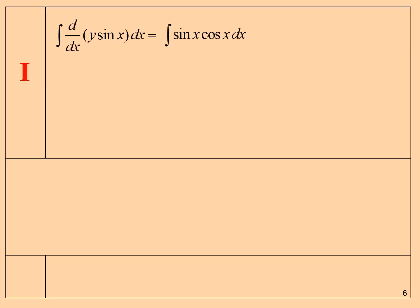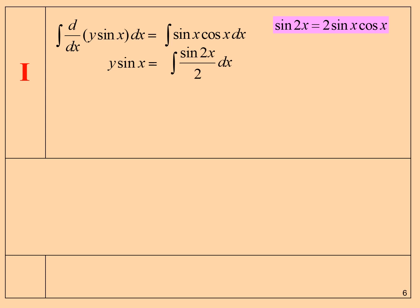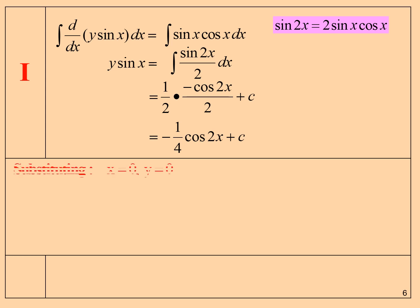Integrate both sides. Using the formula sin(2x) = 2·sin(x)·cos(x), we get -1/4·cos(2x) + C.